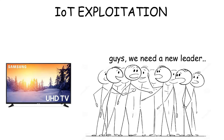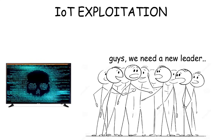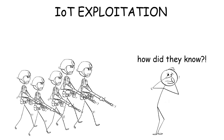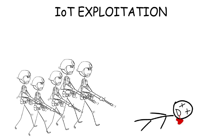A protest organizer might feel safe planning from home, but their smart TV could be recording their meetings because it's been hijacked by the government. That's why it's not a surprise when someone gets arrested or simply disappears.